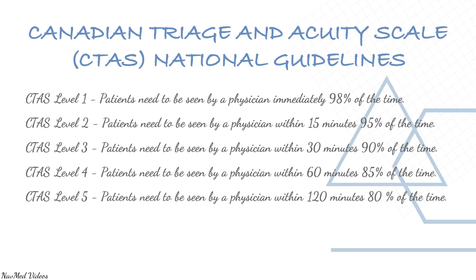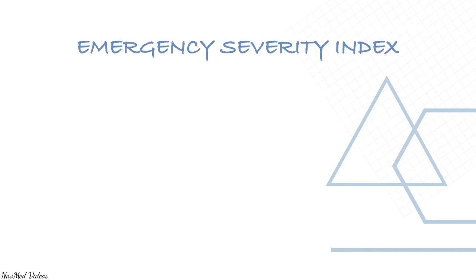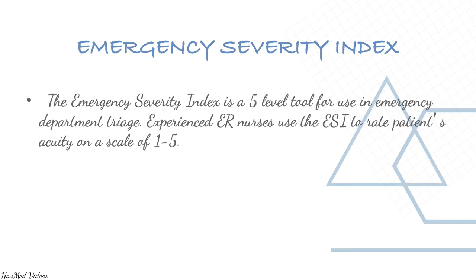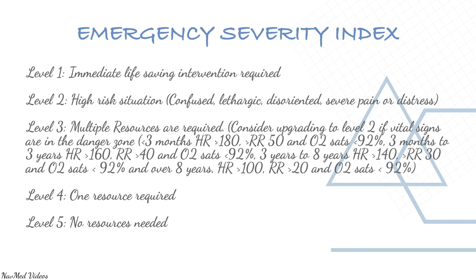The Emergency Severity Index (ESI) is a five-level tool for emergency department triage. Experienced ER nurses use it to rate patient acuity on a scale of one to five. Level 1: immediate life-saving intervention required. Level 2: high-risk situation — confused, lethargic, or disoriented patient. Level 3: multiple resources required; consider upgrading to Level 2 if vital signs are in danger zones. Level 4: one resource required. Level 5: no resources needed. Most patients will be Level 3 or 4.